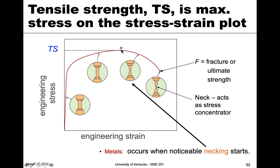The significance physically is that after this maximum point, there's a region of the reduced section that necks — it forms an even smaller cross-sectional area and becomes a stress concentrator. That means the overall stress value actually goes down. So at the maximum, necking begins, and the cross-section becomes non-uniform, localized to a specific point, and it will continue until the sample fractures.